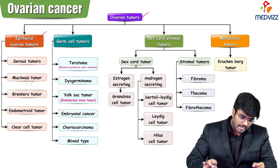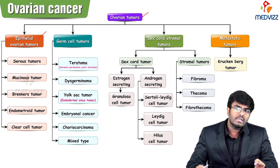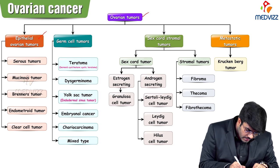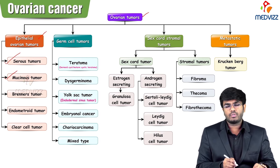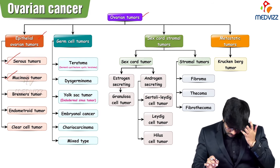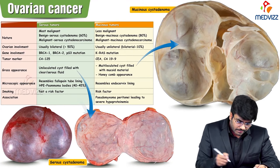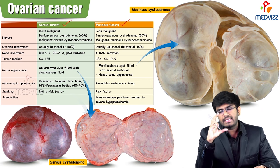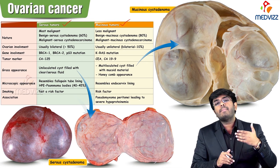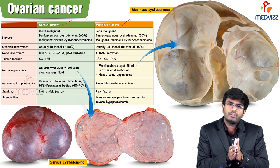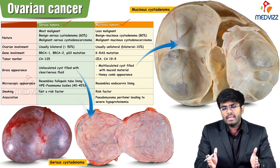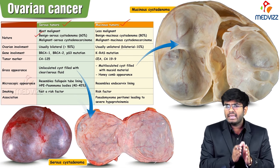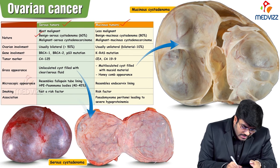Epithelial ovarian tumors arise from the lining epithelium of the ovary. Let's start with serous and mucinous ovarian tumors and compare them. Serous ovarian tumors can be benign or malignant: benign ones are called serous cystadenoma and malignant ones are called serous cystadenocarcinoma. Similarly, mucinous tumors: benign — mucinous cystadenoma; malignant — mucinous cystadenocarcinoma.